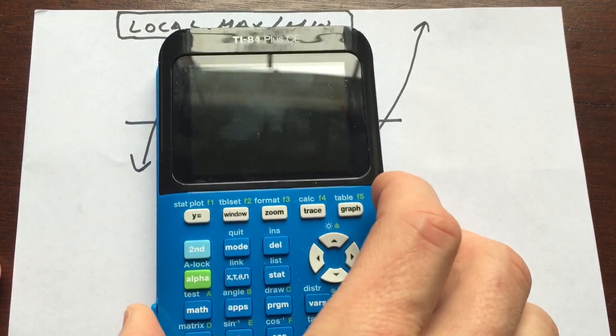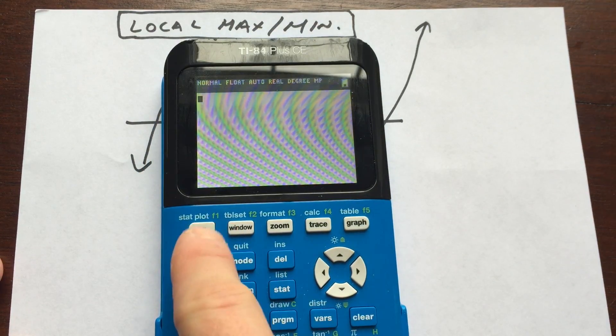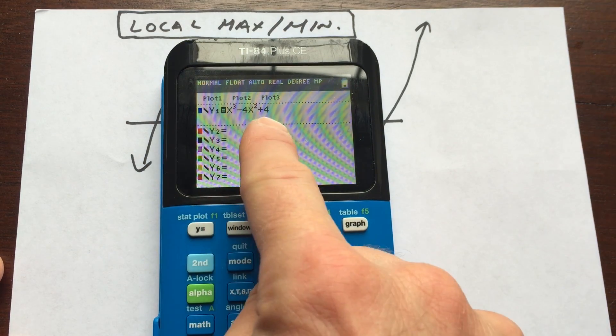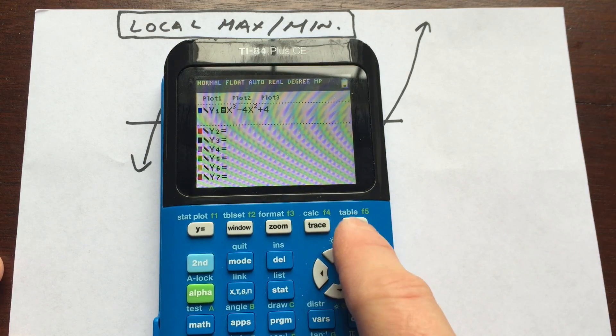So what I've done is I've already inputted an equation into y equals, right here in the upper left-hand corner. You can see I've got x cubed minus 4x squared plus 4. So I'm going to go over here to graph.